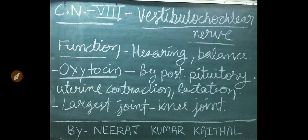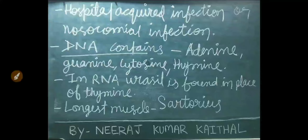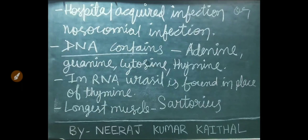Largest joint of our body is the knee joint. Hospital-acquired infection is also known as nosocomial infection. DNA contains adenine, guanine, cytosine, and thymine. In RNA, uracil is found in place of thymine.